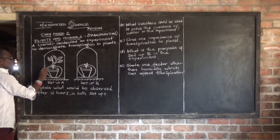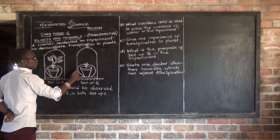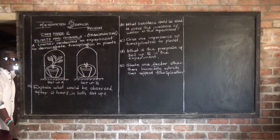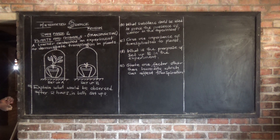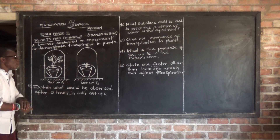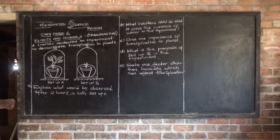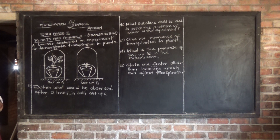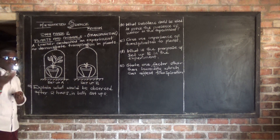In each setup there is a bell jar. The first question is: explain what would be observed after two hours in both setups - Setup A and Setup B.